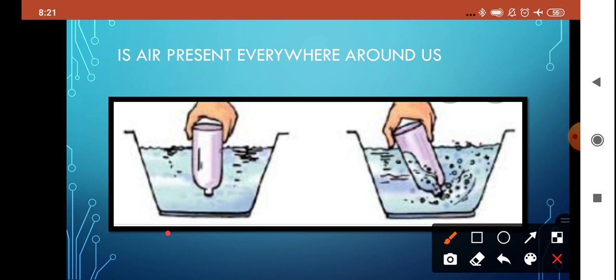For that, what we have done, we have taken two containers. These are filled with water. And then we need two bottles. In the first, you can see, what we have done, we have just inverted the bottle. Vertically, we have inverted the bottle in the water. And then when we will observe this, the bottle is not getting filled up. Why is this happening?